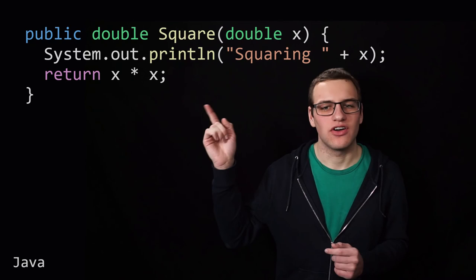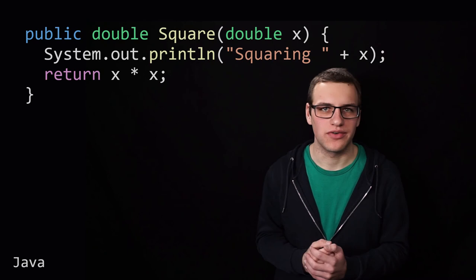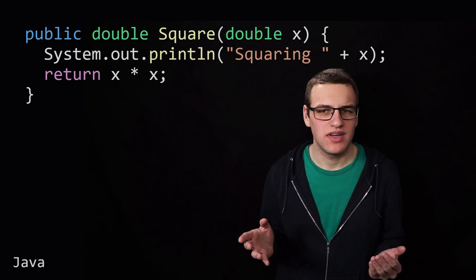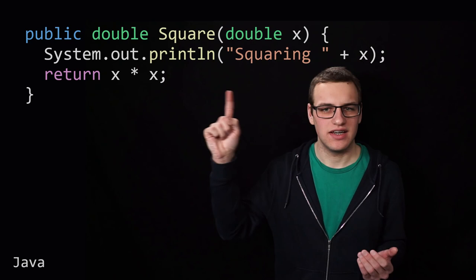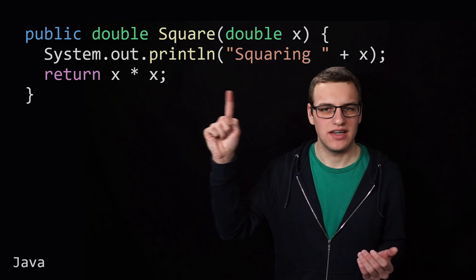But there is one type of function that we haven't covered in this, and that is a function like this. One of the things this function does is print some output to the standard output of the program. Usually that is the console. But how do we model this in the type system? As you can see the return type is just a double. But similarly if we remove the logging output from this function, the return type would still be a double. So how do we know from the type system that this function is supposed to log or not?